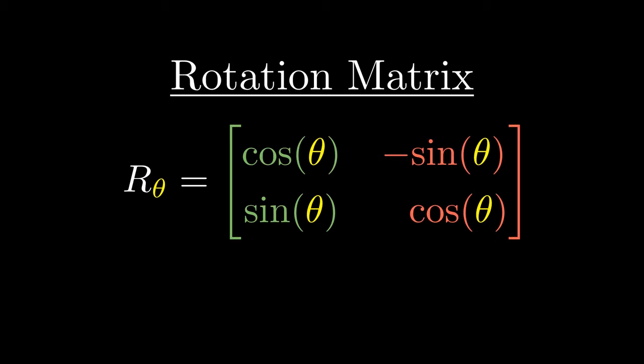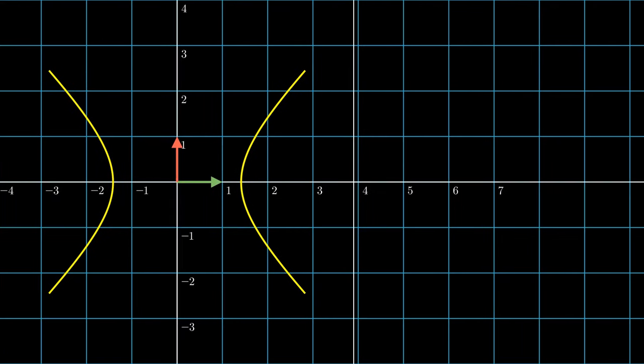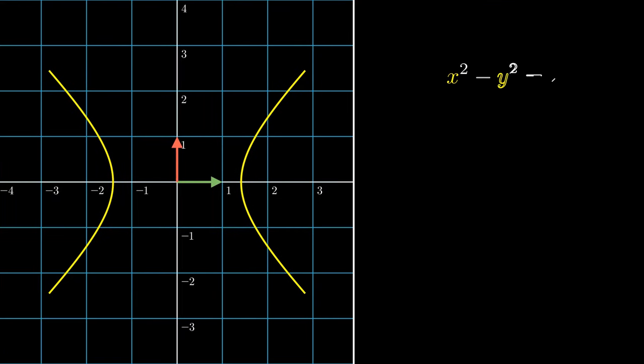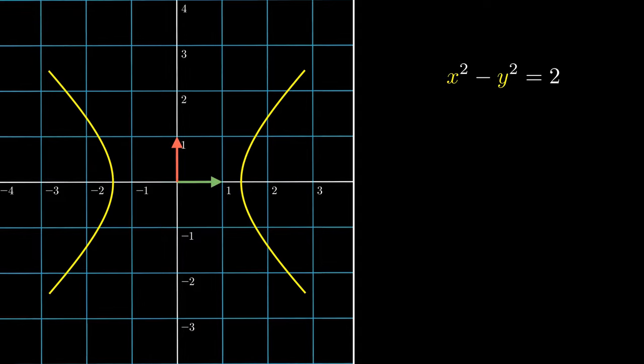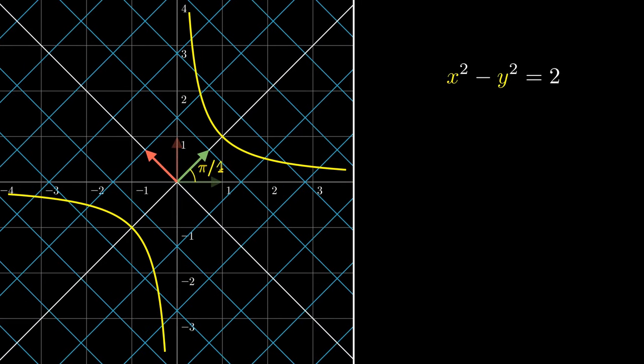And we can apply this in the context of graphing a hyperbola. A hyperbola has two separate branches, and its equation is the standard equation x-squared minus y-squared equals 2. If we rotated this by pi over 4 radians, we obtain a suspiciously familiar graph. Every point gets rotated by pi over 4 radians in the anti-clockwise direction.